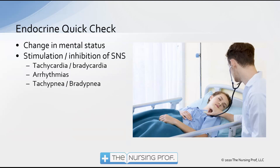Our endocrine quick check is to look for a change in mental status. Endocrine problems cause changes in mental status, either related to the primary disorder or to underlying electrolyte abnormalities. We may see stimulation or inhibition of the sympathetic nervous system — tachycardia or bradycardia, dysrhythmia, tachypnea or bradypnea. These signs may look like a cardiac or neurologic disorder, so we need to do a thorough exam to uncover the underlying endocrine cause.